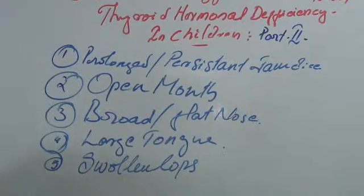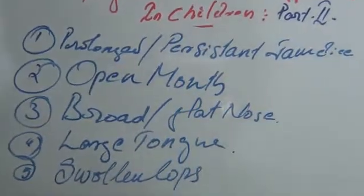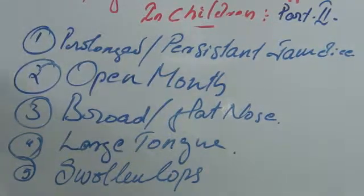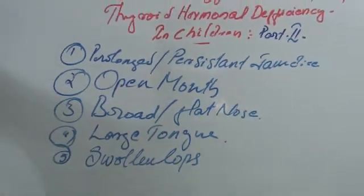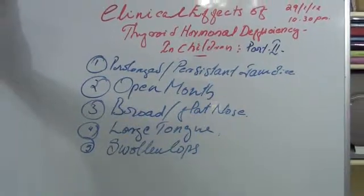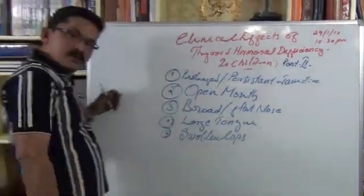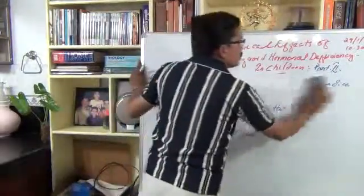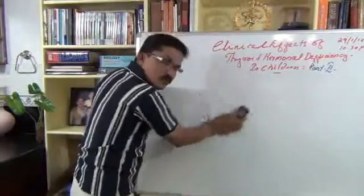The overall appearance of the hypothyroid child features these facial characteristics. On observation, the face may appear puffy — that is, an edematous face. In cretinism, the facial appearance of the child may look like a moon face.